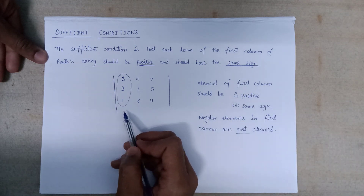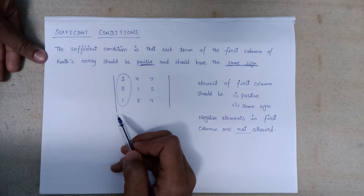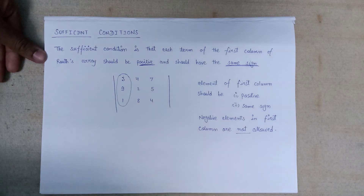This is all about the necessary and sufficient conditions of the Routh Array. Thank you.